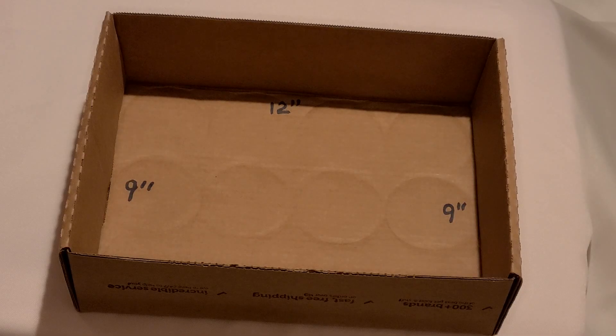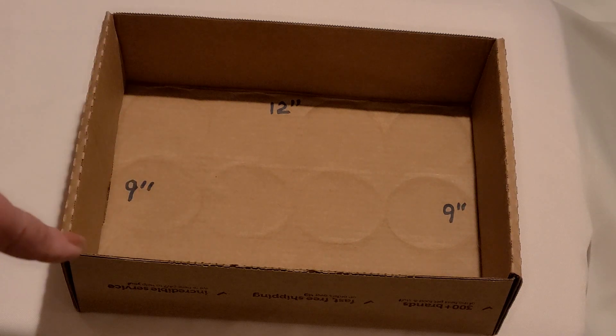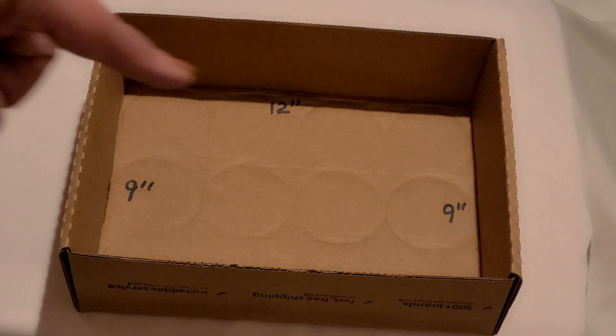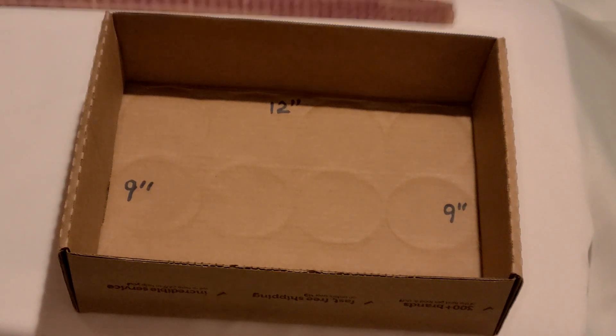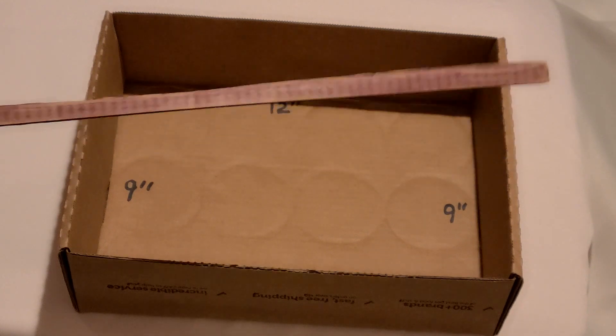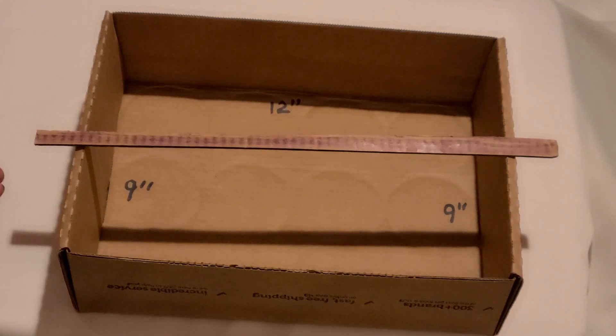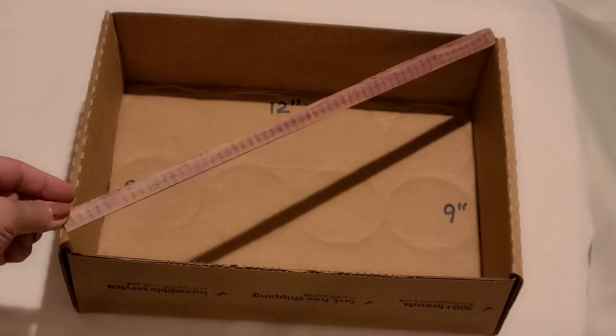So here I have a box, and you can see right here this side is 9 inches and it's 12 inches across. This side right here is 4 inches tall. Now, I have this stick. And if you look, this stick is longer than the box. Even if I try going on a diagonal like this, it's longer than the box.